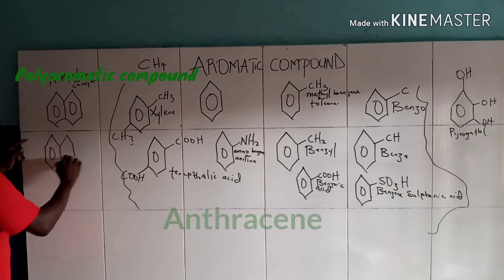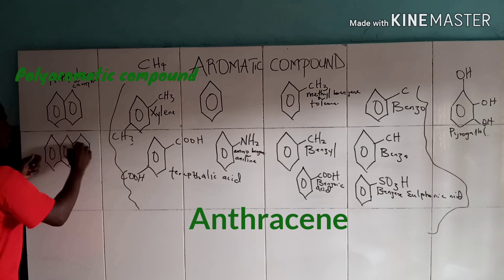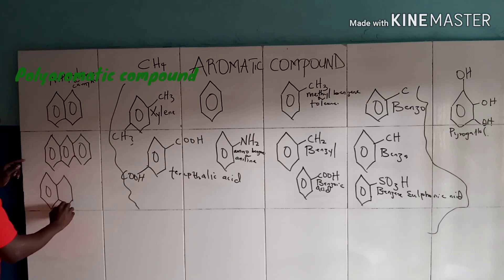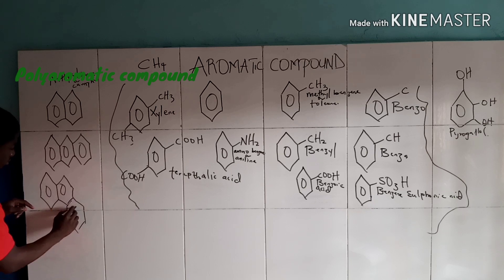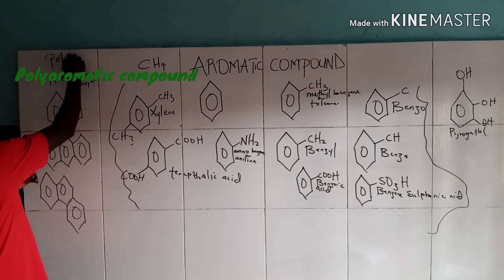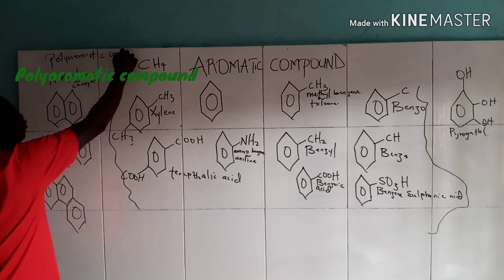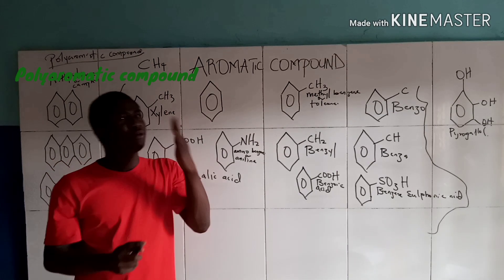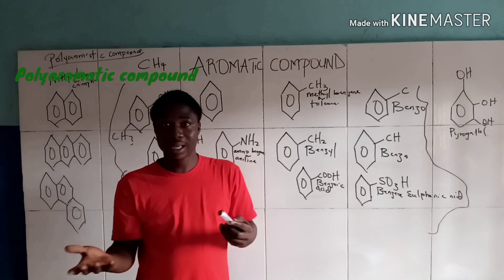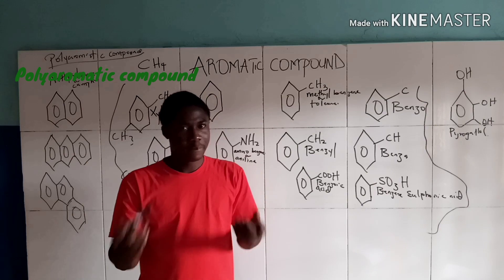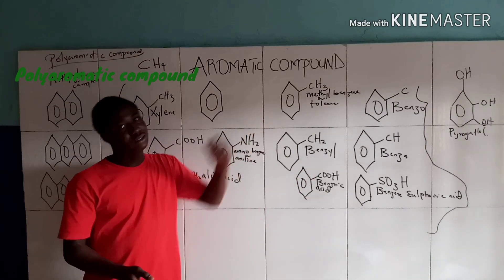When we have three benzene groups fused together in a linear arrangement, it is called anthracene. When the three benzene groups are arranged in an angular pattern, it is called phenanthrene. All of these are examples of polyaromatic compounds and benzene derivatives. Remember, benzene is sp2 hybridized, has a sweet smell, and is colorless.